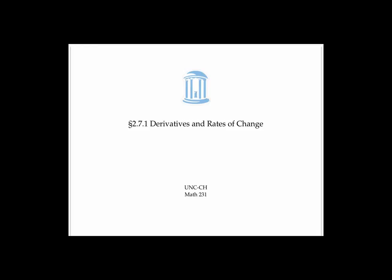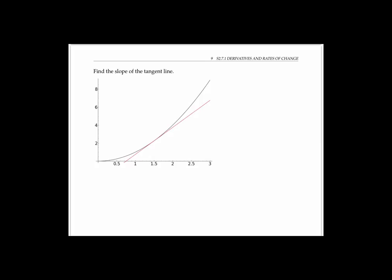In this video, we'll introduce the idea of the derivative using graphs, secant lines and tangent lines. I have a function here drawn in black, y equals f of x, where f of x equals x squared. I also have a tangent line to my function drawn in red. This tangent line is the tangent line at the point 1.5, 2.25. By a tangent line, I mean a line that touches the graph of my function at this one point and heads off in the same direction as the function.